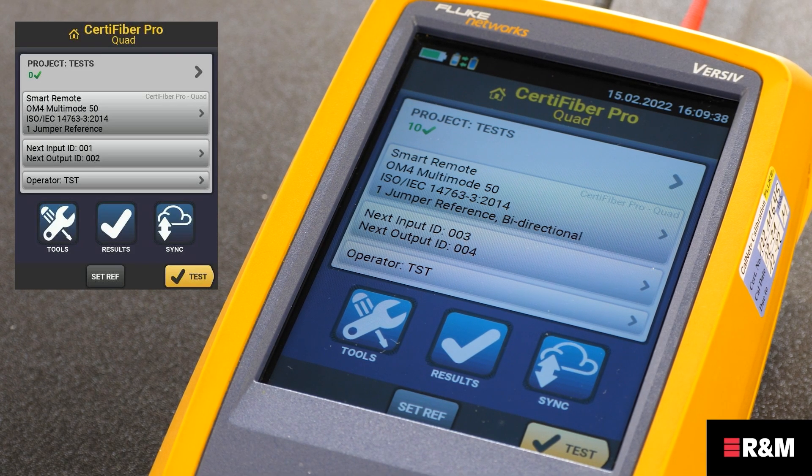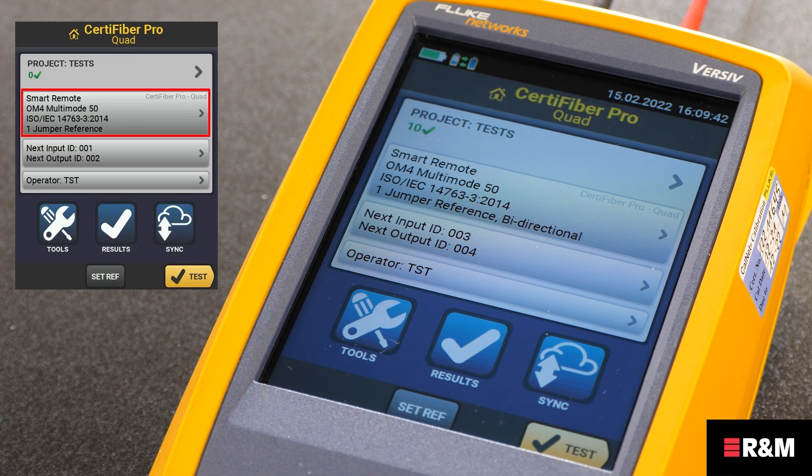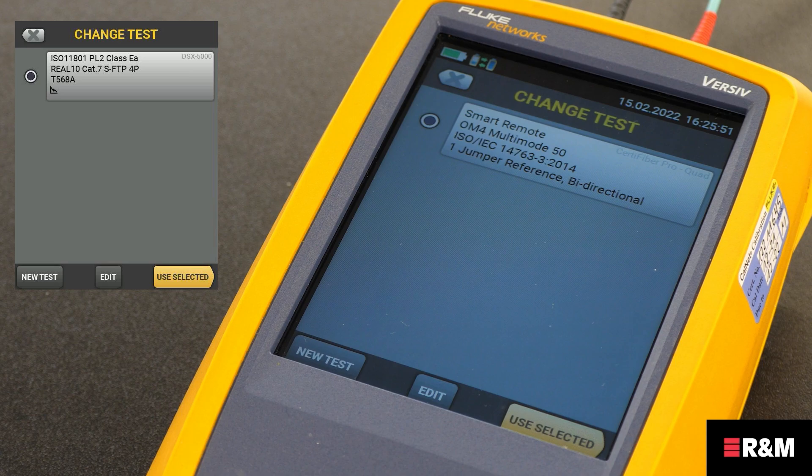Now, let's see how to make the selections in the tester for the right test setup. Of course, other testers are available and the appropriate manufacturer can provide the methods to do this. Let's start with a new test. On the home screen, tap the test setup panel. On the change test screen, you can select a fiber test to change and then tap edit, or to set up a new fiber test, tap new test.